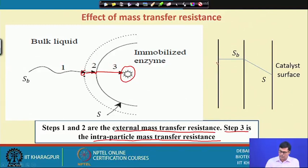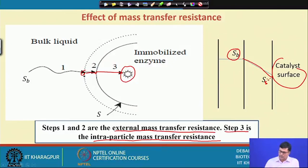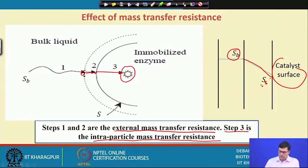Sb is the bulk substrate concentration, and Ss is the substrate concentration at the surface of the solid matrix. There is a concentration gradient Sb minus Ss. In most cases, the substrate concentration at the surface is less compared to the bulk substrate concentration.